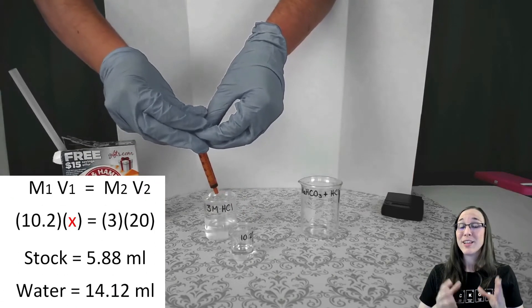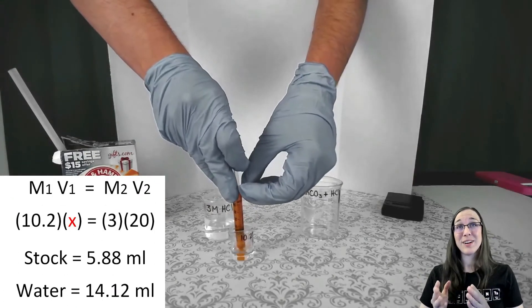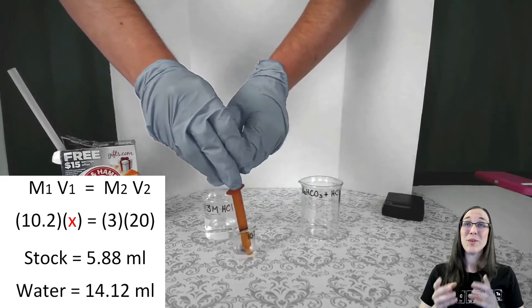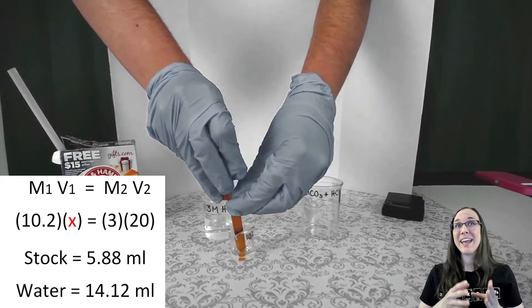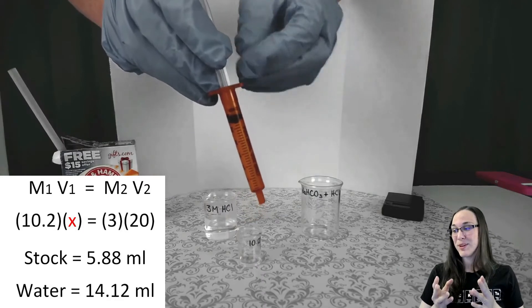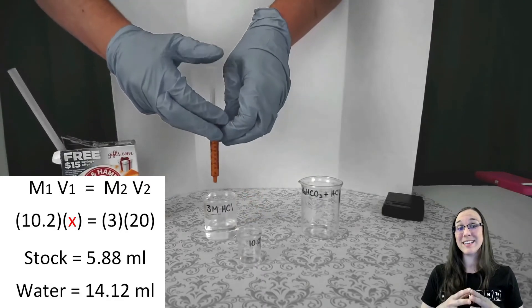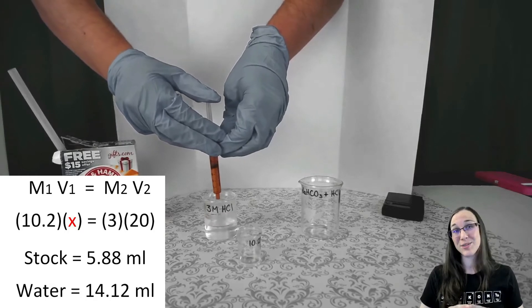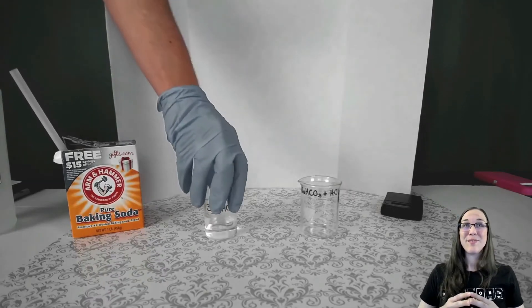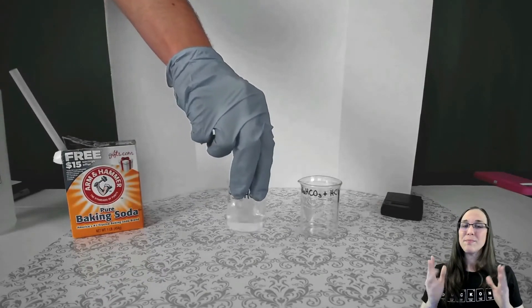So now I'm just adding the first amount of the hydrochloric acid stock solution to our diluted beaker. And here's the second bit here, because we needed to add a total of 5.88 milliliters of hydrochloric acid in total to make the 3 molar hydrochloric acid. There we go. Final bit and a perfect swirl, perfect technique.